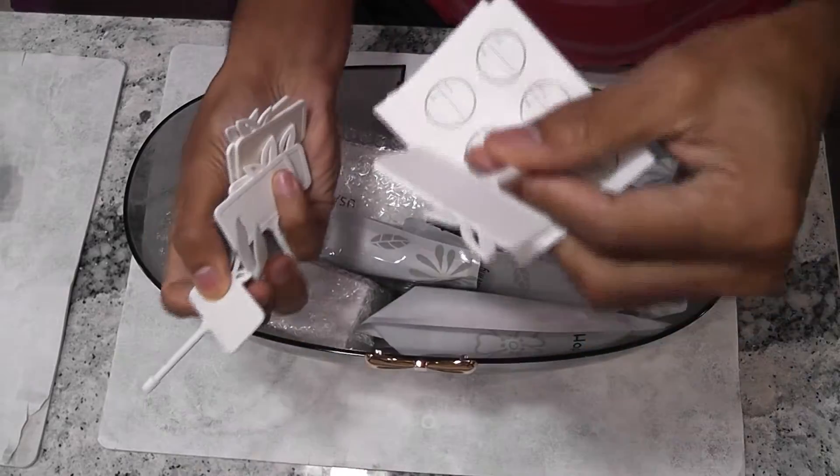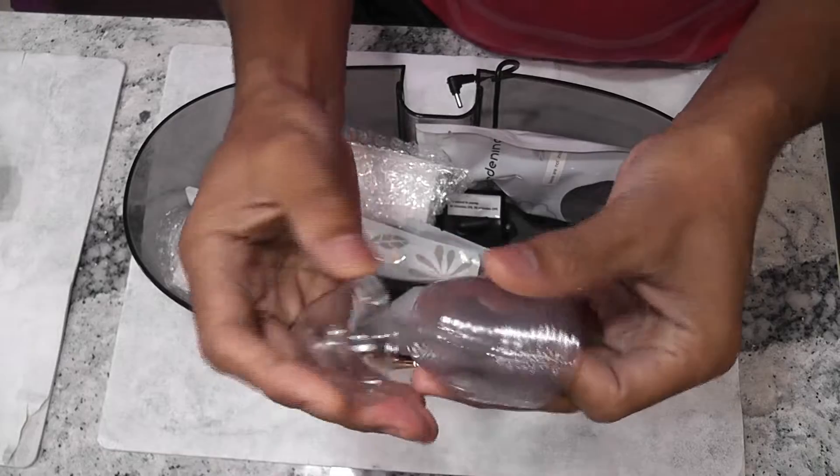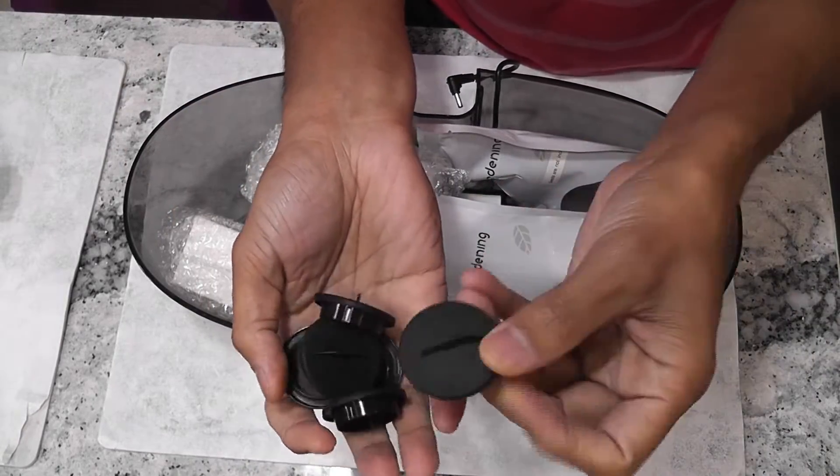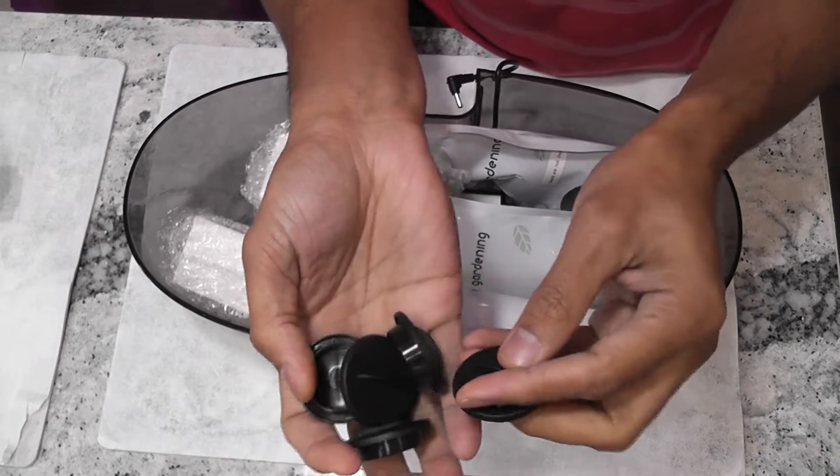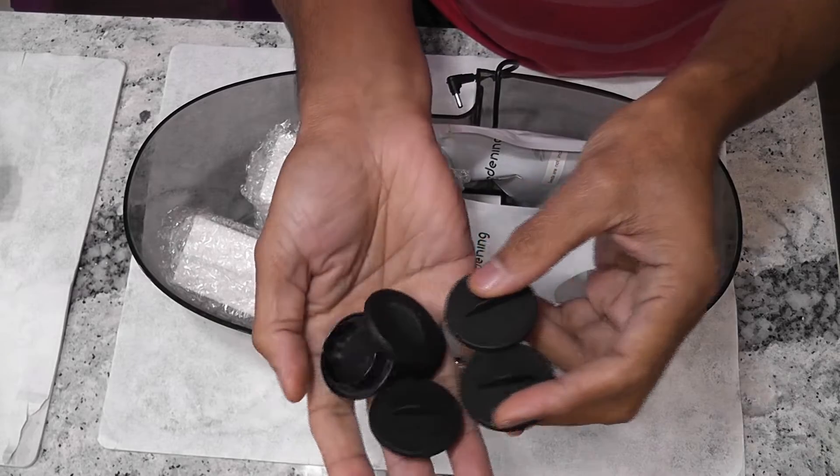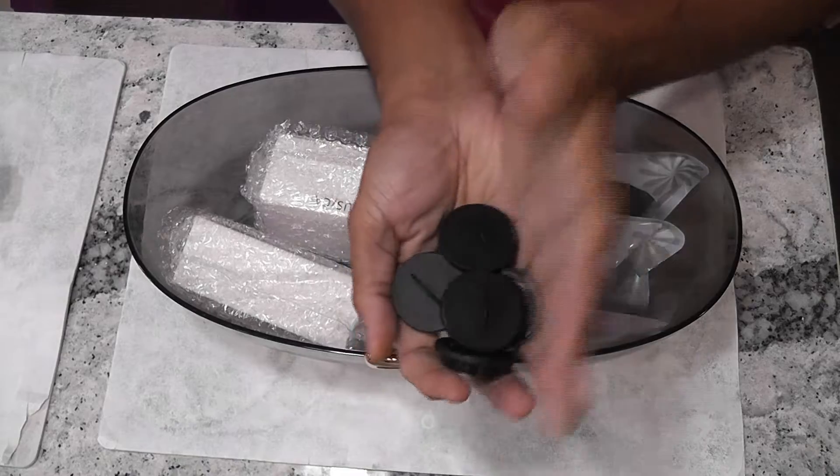It comes with the plant tanks and some labels and the domes, stickers, and the hole covers also called plant spacers. We can use these to cover the unused holes. They included six of these, this is really nice.